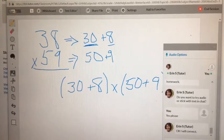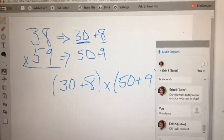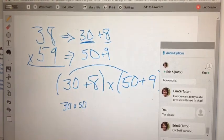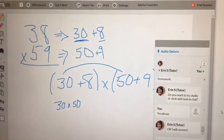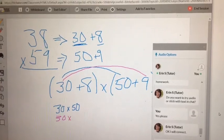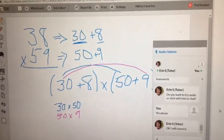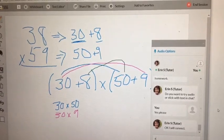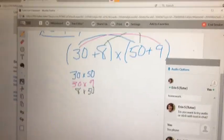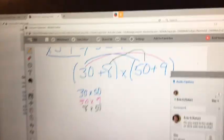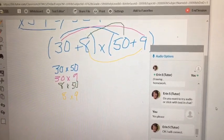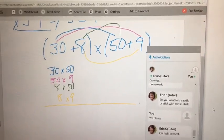So their example has you first kind of drawing arrows almost from one thing to another. So first 30 times 50, and we won't actually do the multiplications yet. Let's just kind of write them all out. Then 30 times 9. Thanks for switching colors. I really like that. I'm a big color person. And then lastly is going to be 8 times 9. And then we're going to do all of those multiplications and then add them down.